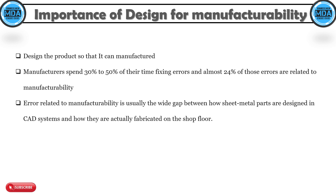The design engineer should always design a part so that it can be manufactured. Manufacturers spend 30 to 50 percent of their time fixing errors, and almost 20 to 24 percent of those errors are related to manufacturability.